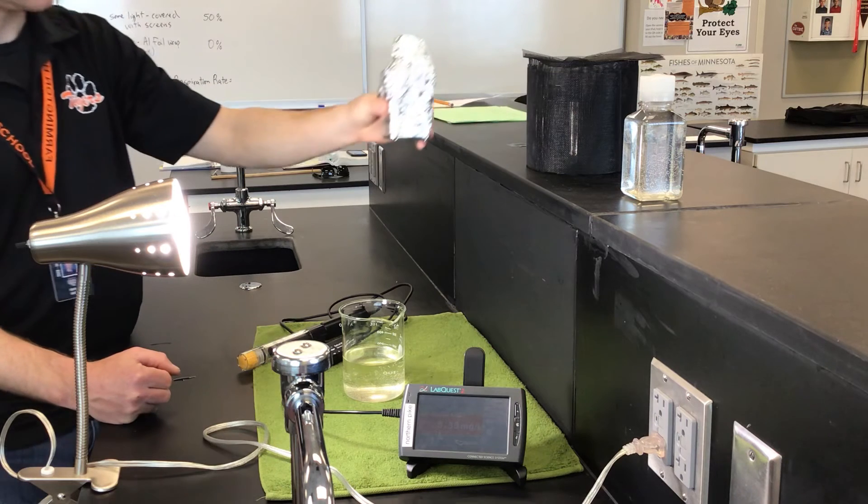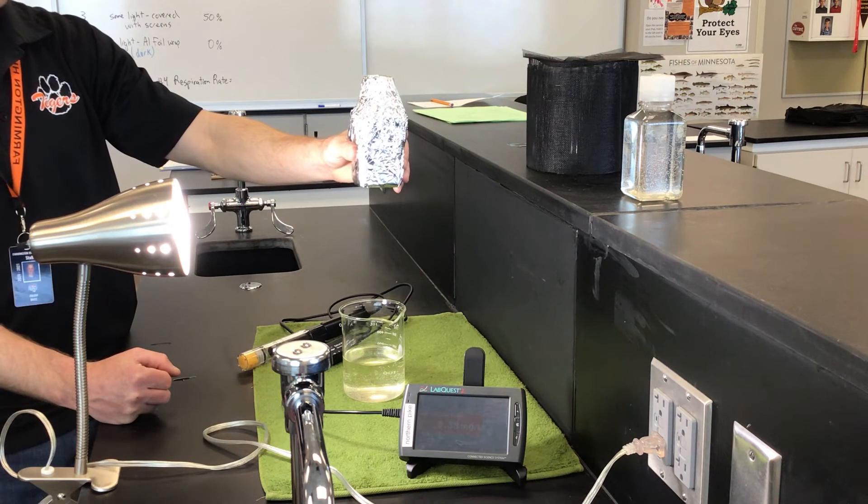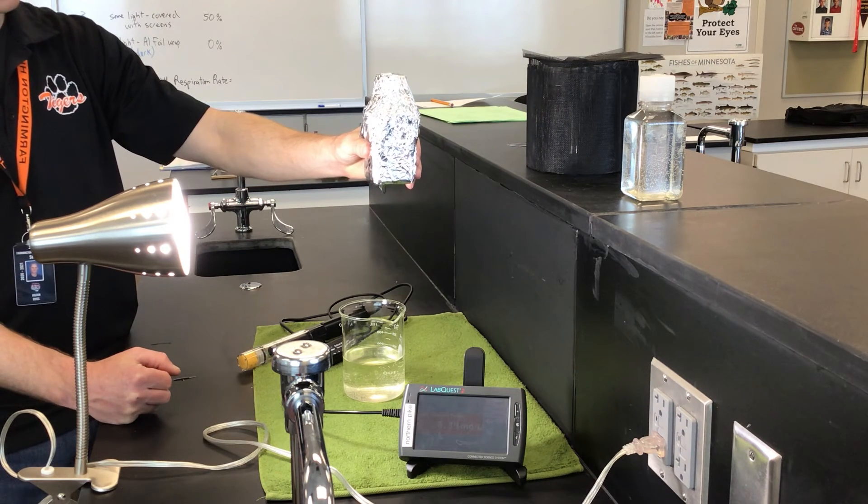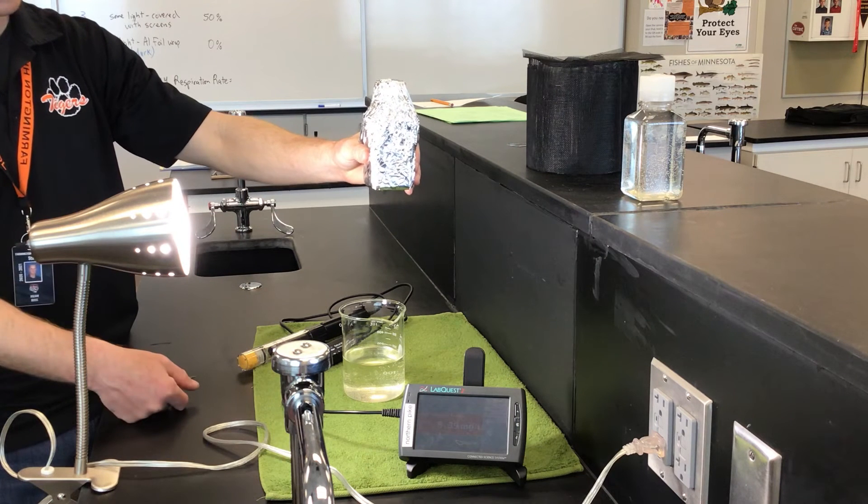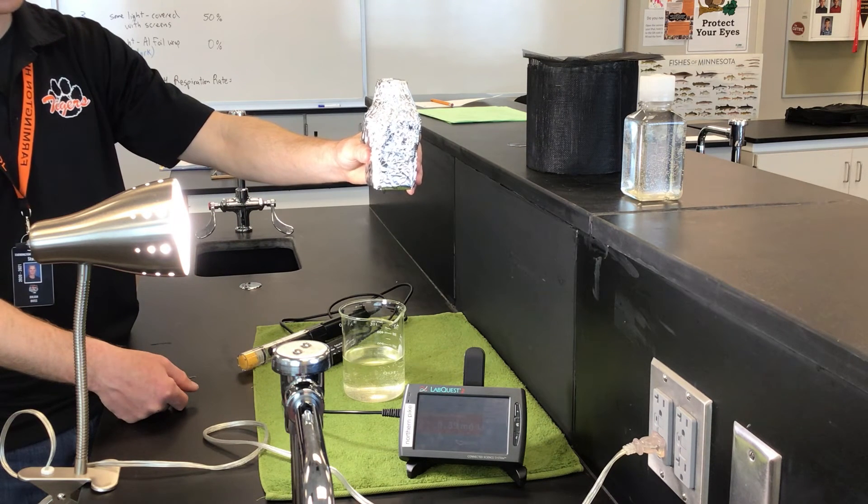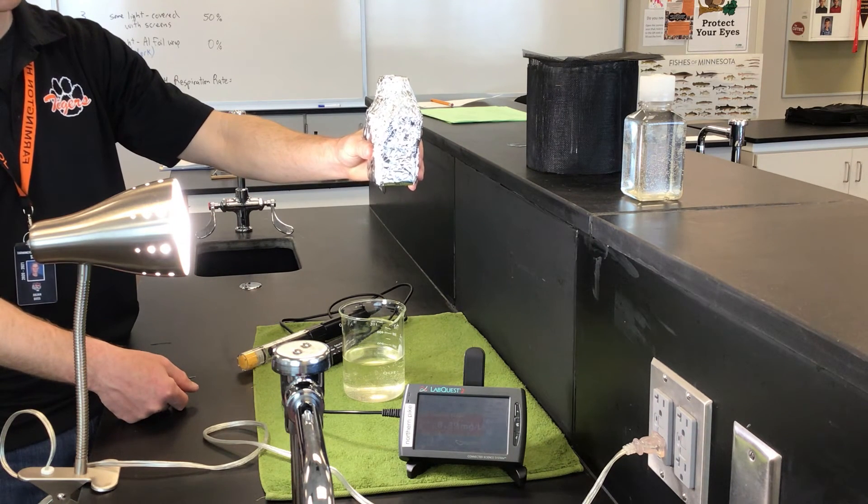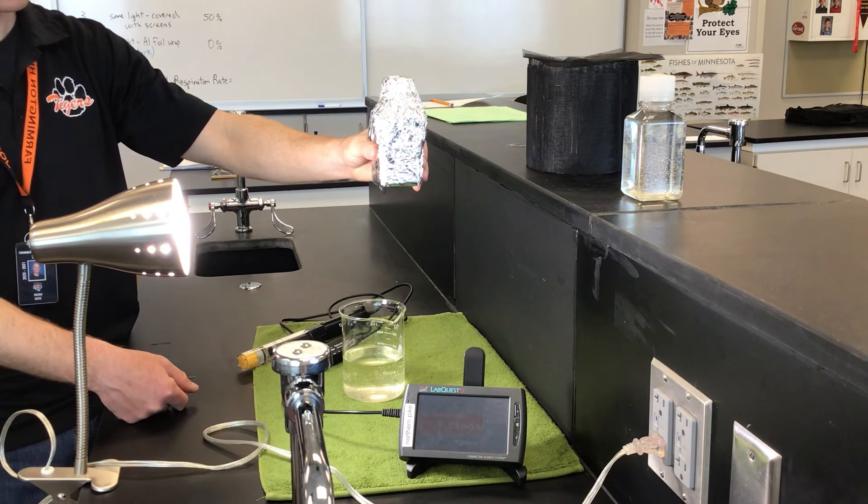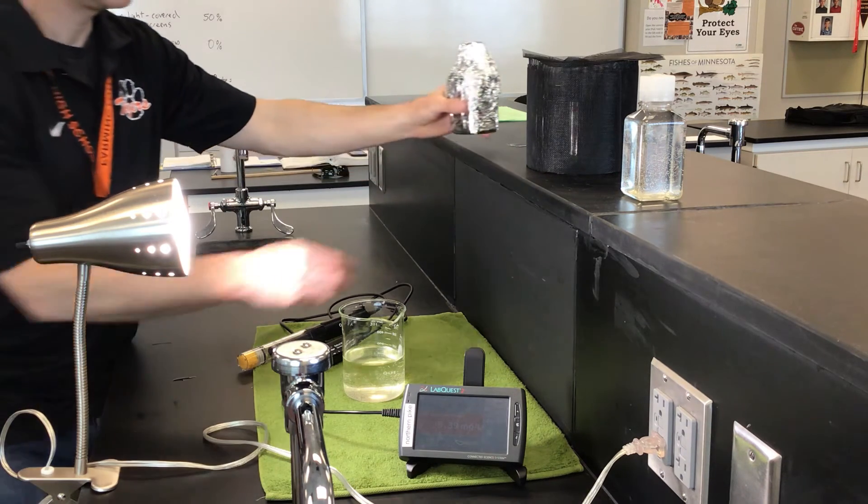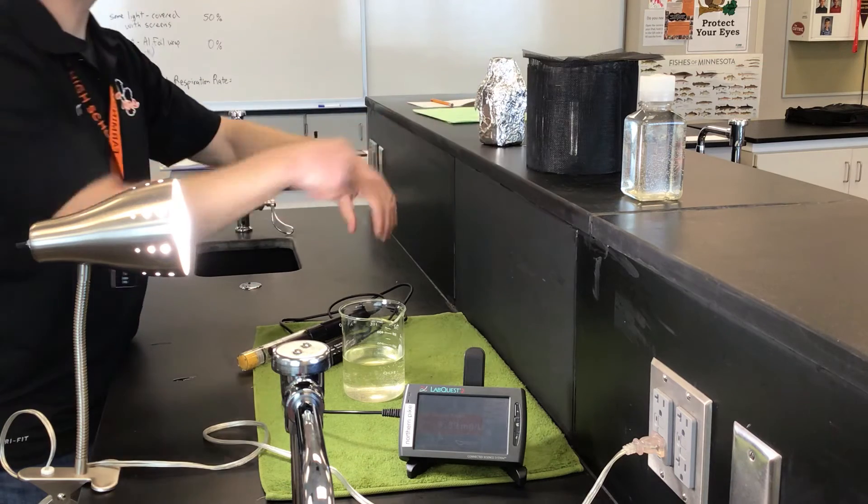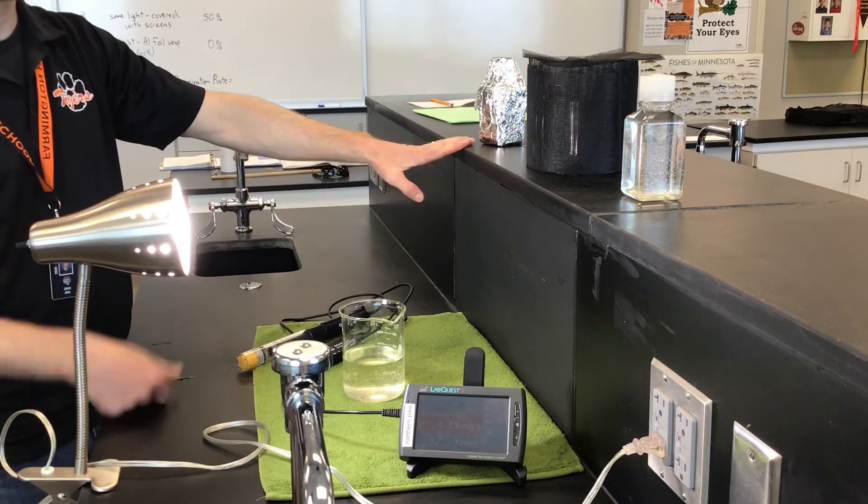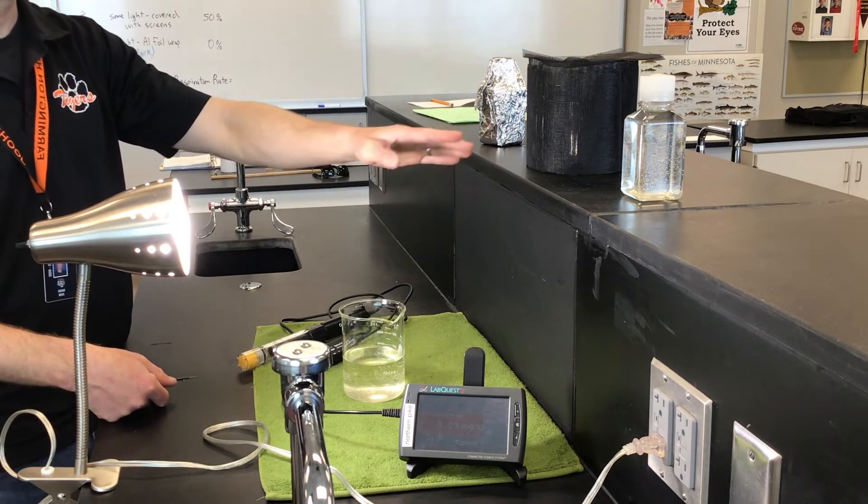one, and then I got another one here that I completely covered up with aluminum foil. So any algae in there are not getting light, so theoretically photosynthesis should not be occurring in here. This is the dark condition: 100% light, 50% light, 0% light. Pretty straightforward. I could have